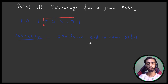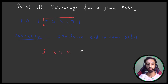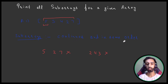When I say continuous and in the same order, I mean: if I take 5, 2, and 7 — those are not continuous because we are skipping elements in between, so that's wrong. And if I take 3, 4, 2 and change their order to 2, 4, 3 — that's also wrong. So valid subarrays are things like 3 itself, or 4, 2, 7.